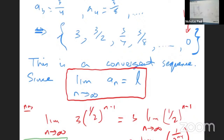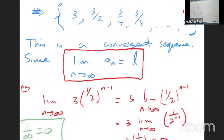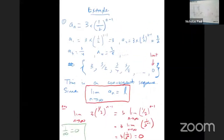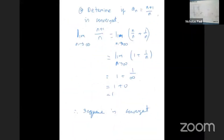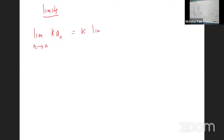I want to spend a little time going over some limit rules. If I give you the limit as n approaches some value E of a function, and there's a constant k in front, we can pull k outside the limit. I'll change this slightly — just giving you some rules to remember when simplifying limits.